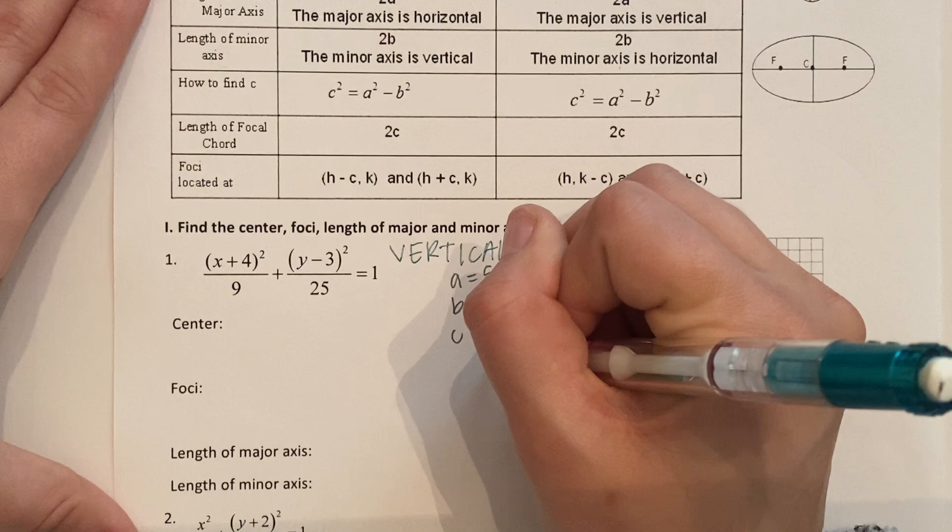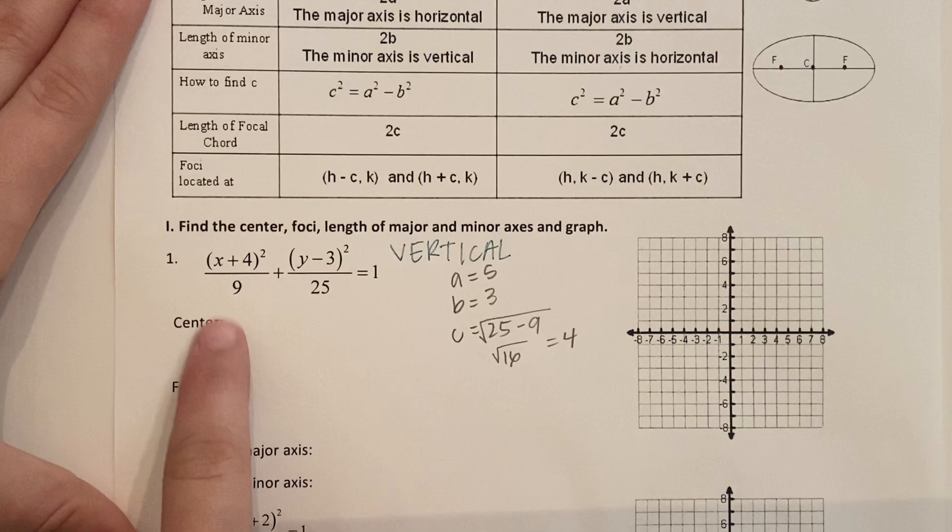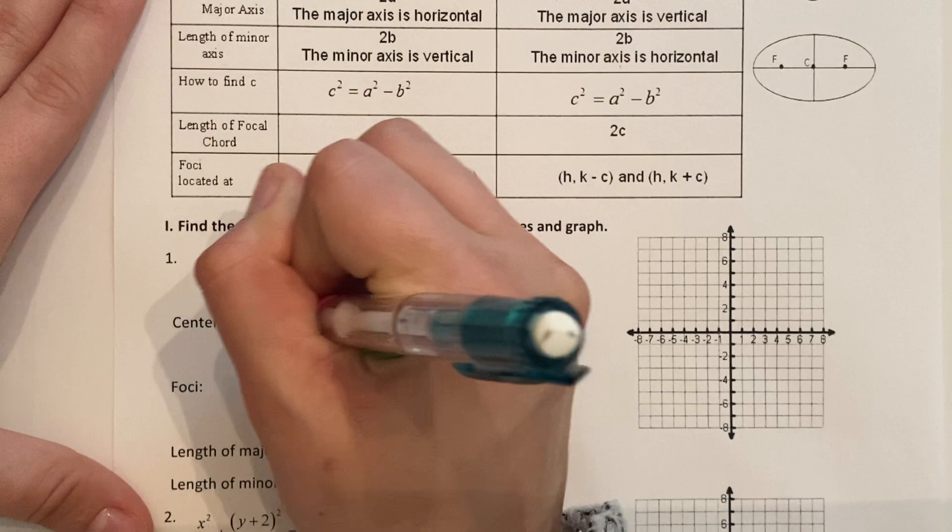Now to find C we're going to do the A squared minus the B squared. So 5 squared is 25 minus 3 squared is 9. Since that does equal C squared, I'm going to square root it just like we do in Pythagorean theorem. 25 minus 9 is 16. C is 4.